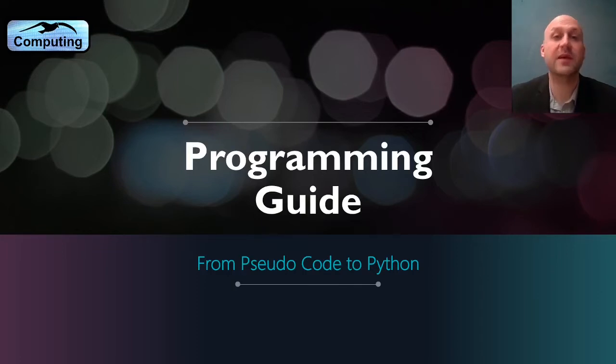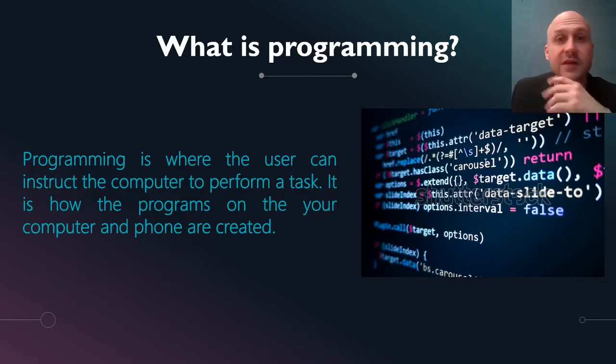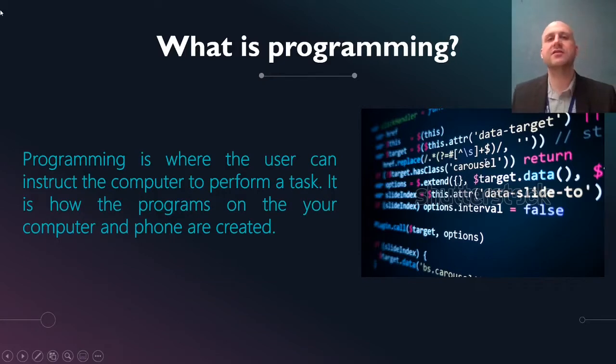So here we are going to go through some of the basics of the programming component to the course. First of all, what is programming? We'll start off like you don't know anything and then we'll move from there. So programming is where the user can instruct the computer to perform a task. It is how the programs on your computer and phone are created. There's an example of some code on the right. So code is another expression which means the actual information that you type into the computer, into the programming language, of which there are many. In this course we're going to be looking at Python, although the exam is in something called pseudocode, so we'll look at that as well.